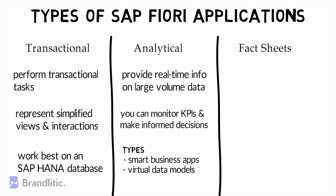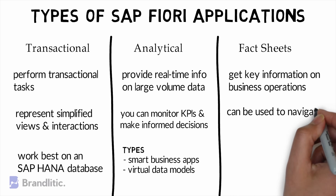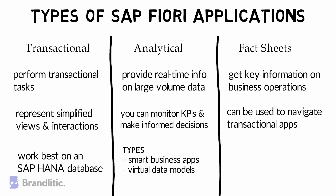Fact Sheets are used to get key information about central objects in your business operations. One can also use Fact Sheets to navigate transactional apps which run through SAP transactions. For example, in a vendor contract, one can drill down into further details to get related information like vendor details, contract terms, item details, and order number, with the help of Fact Sheets.